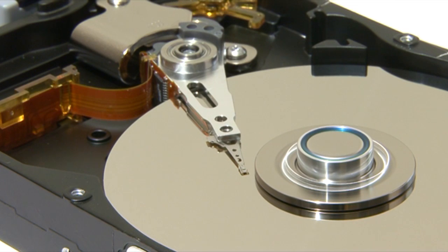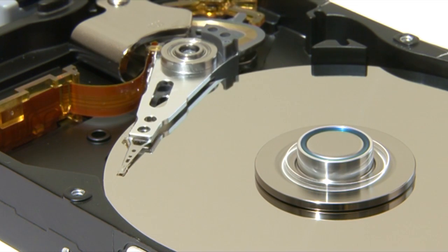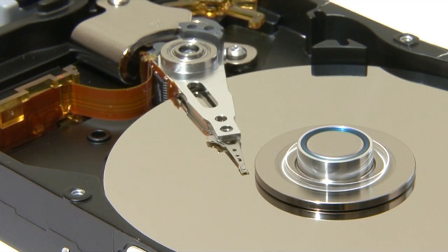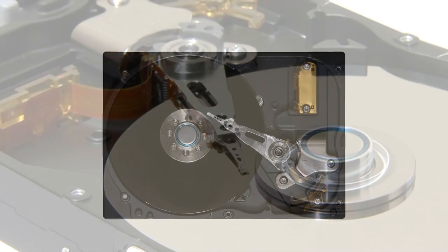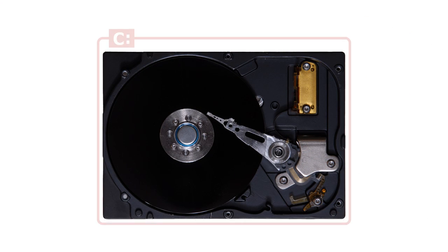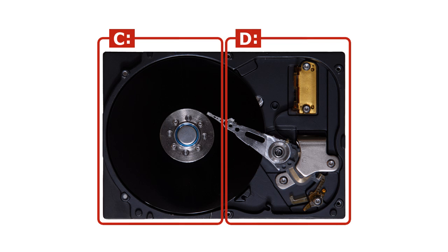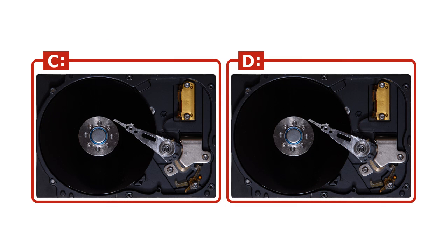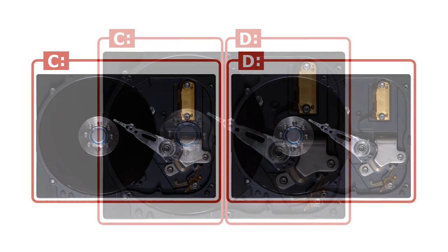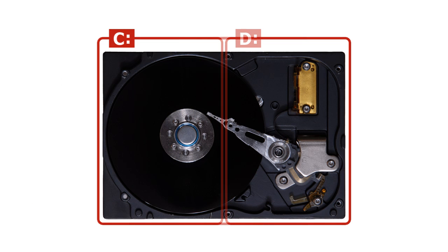On most personal computers, there is a direct relationship between each user volume and a physical disk. For example, on a Windows PC, the C drive is usually a single physical hard disk or solid state drive. On some computers, one single hard disk may be subdivided or partitioned into multiple volumes. Or alternatively, an extra hard disk may be fitted as another volume. However, in all of these instances, the data stored in each volume resides on a single drive.